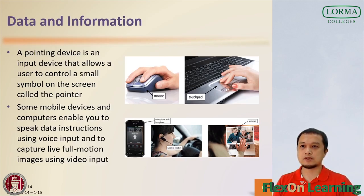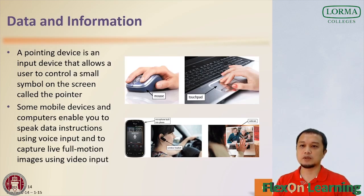Desktops typically use a mouse as their pointing device. Laptops use a touchpad. A mouse is a pointing device that fits under the palm of your hand; with a mouse you control the movement of the pointer and send instructions to the computer or mobile device. A touchpad is a small, flat, rectangular pointing device that is sensitive to pressure and motion. For some mobile devices and computers, you can speak data instructions using voice input, or capture full live motion images using video input. With your smartphone, for example, you may be able to use your voice to send a text message, schedule an appointment and dial a phone number. Or you may opt for a video call instead of a voice call so that you and the person you call can see each other as you chat on a computer or mobile device.